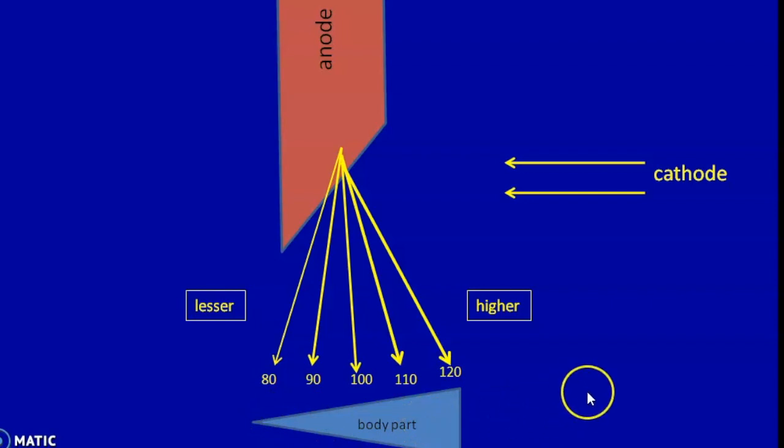For example, when we image the abdomen, the less dense upper abdomen can be placed towards the anode side and the more dense pelvic girdle can be placed towards the cathode side.